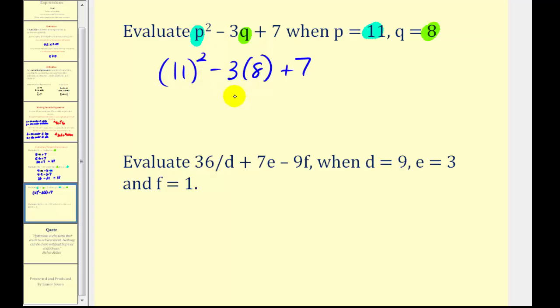So we'll first evaluate the exponents. 11 squared equals 121. Next we will multiply. So 121 minus 3 times 8 is 24, plus 7.